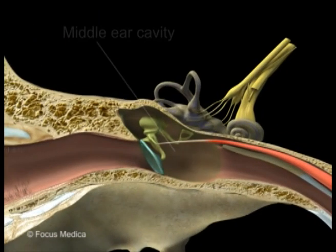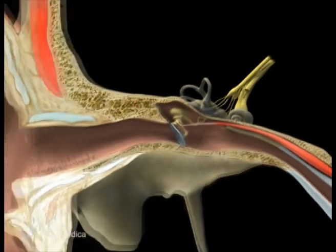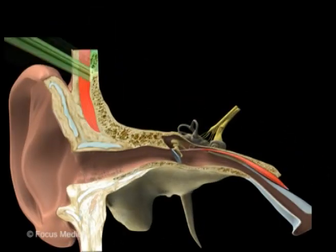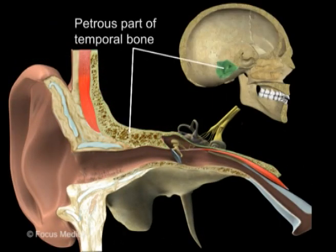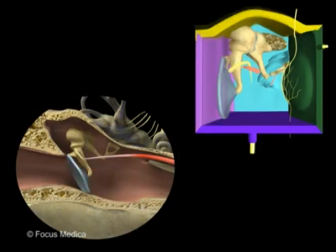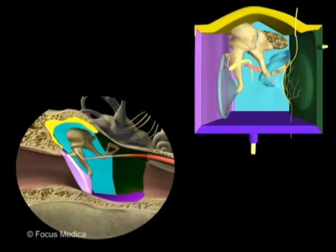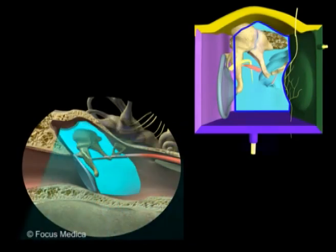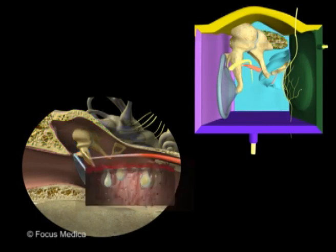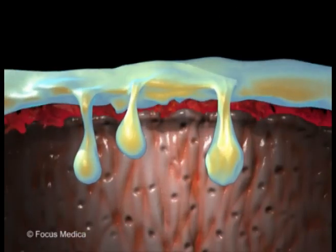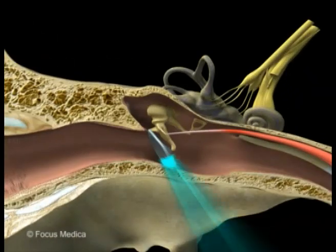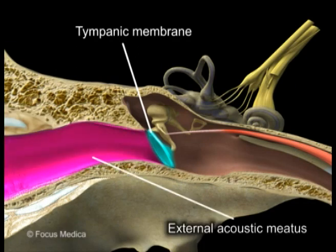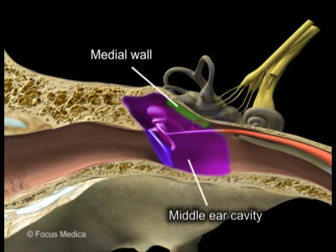The tympanic cavity is also called the middle ear cavity. It is sandwiched between the external and the inner ear, and is located entirely within the petrous part of the temporal bone. It is a six-walled space communicating with the nasopharynx anteriorly, and posteriorly it communicates with the mastoid air cells. The cavity is lined with respiratory mucous membrane. The tympanic membrane separates it laterally from the external acoustic meatus, while the medial wall is common to it and the internal ear.